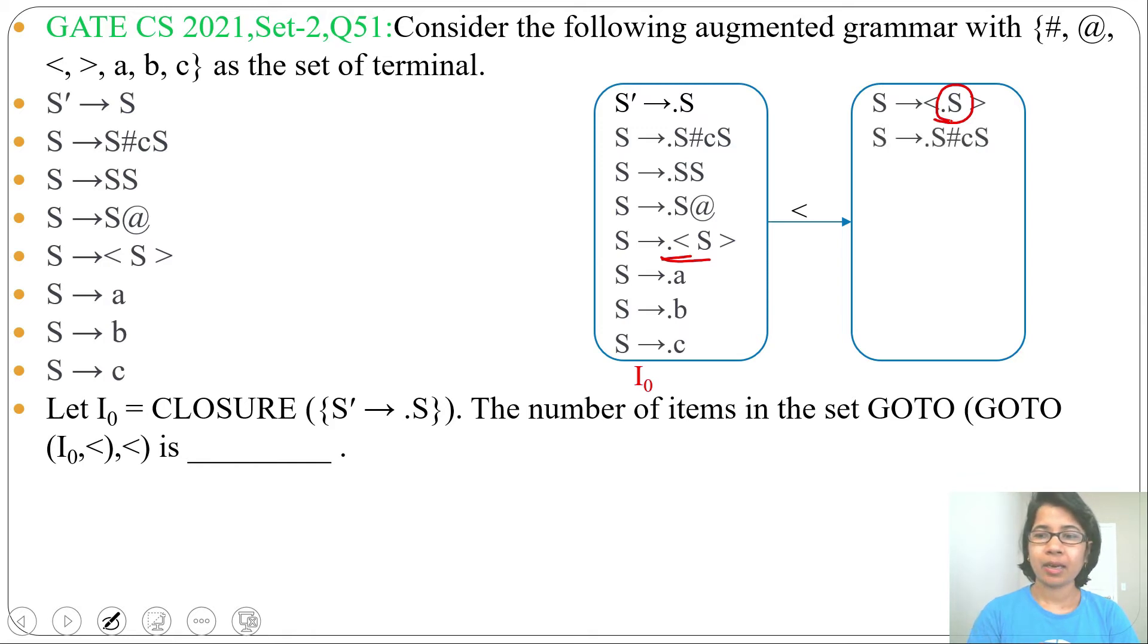S derives dot S hash c S, S derives dot S S, S derives dot S at the rate, S derives dot less than S greater than symbol. Just remember this LR0 item and this LR0 item are different.